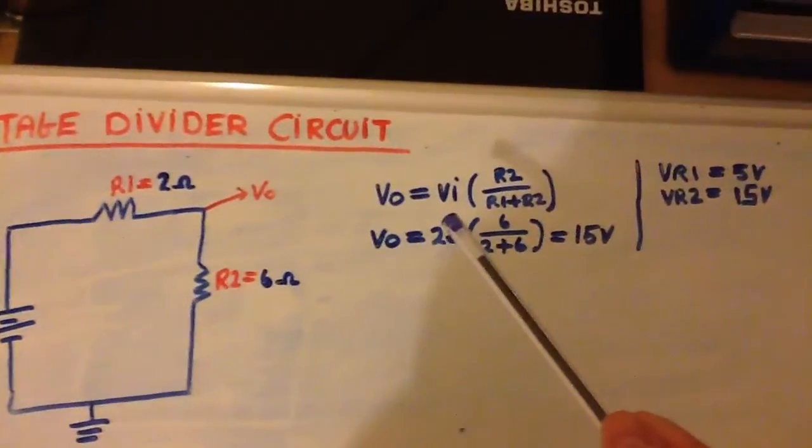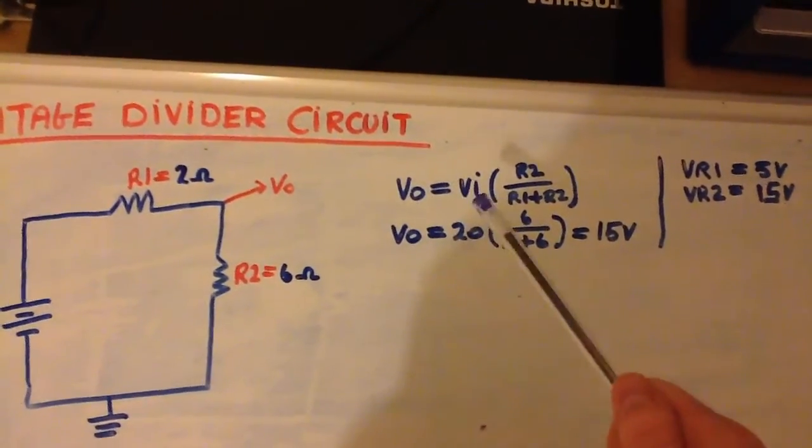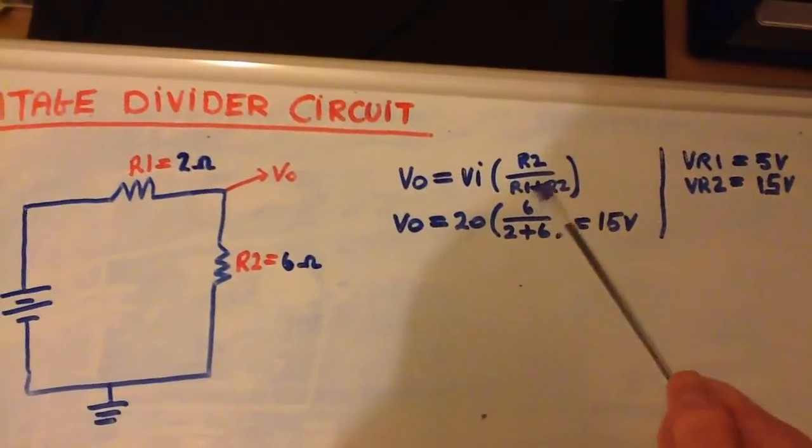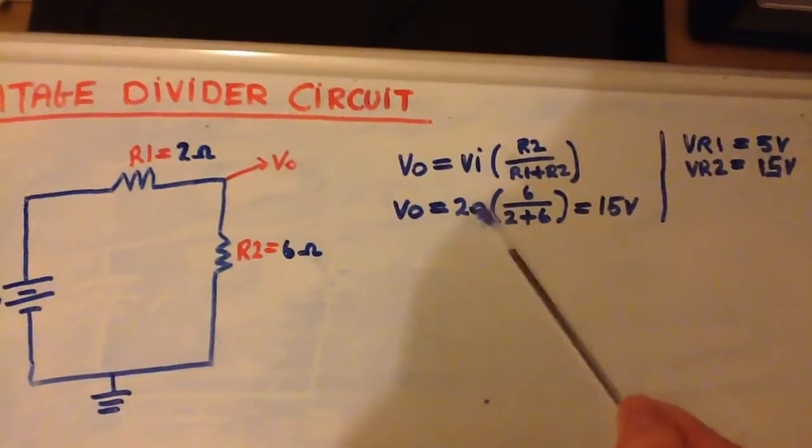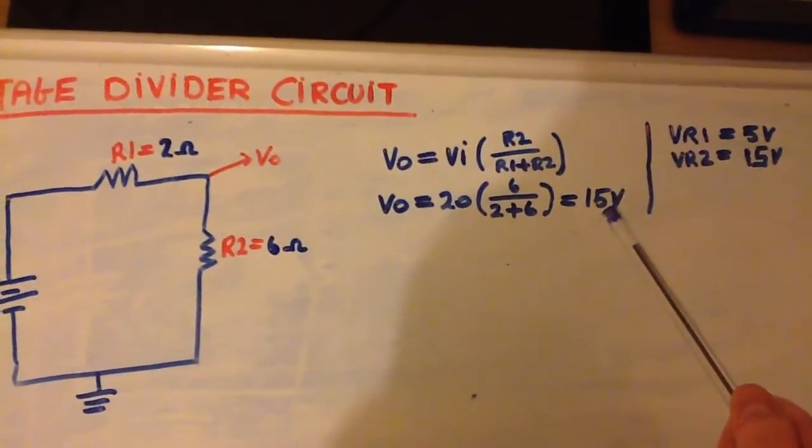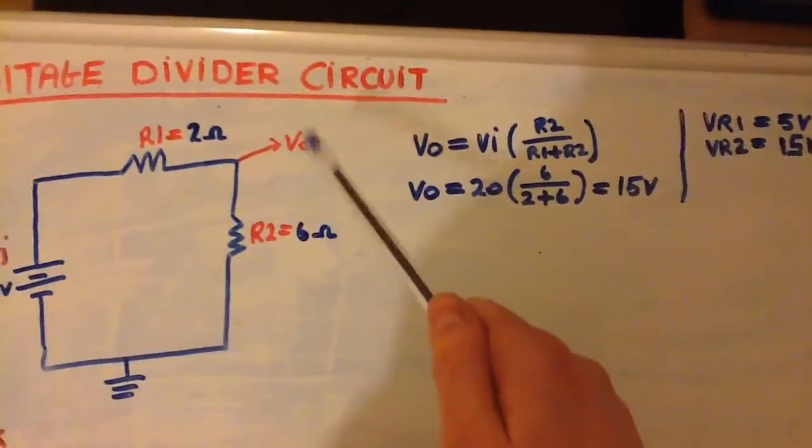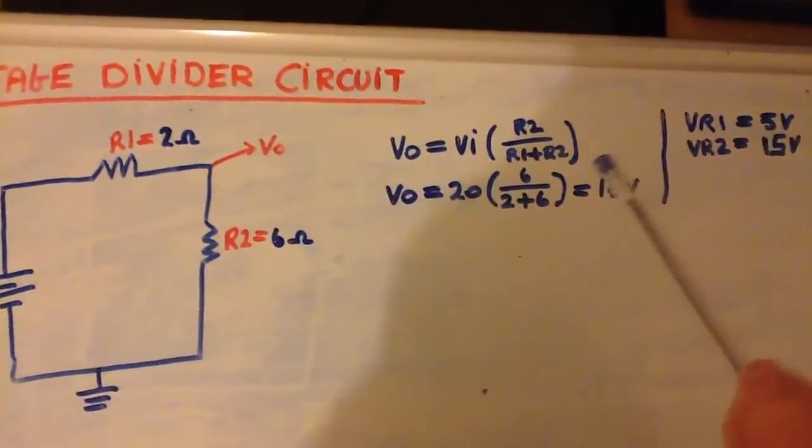So this is the equation: Vout equals Vin times R2 over R1 plus R2. So when we plug our values in, we can see that we will have 15 volts at this point here. Now just by knowing that little bit of information,